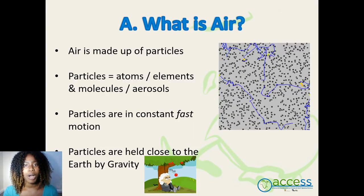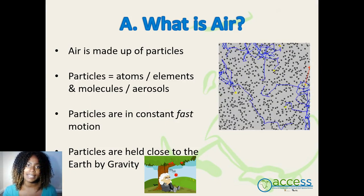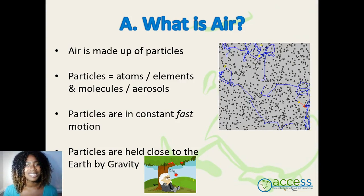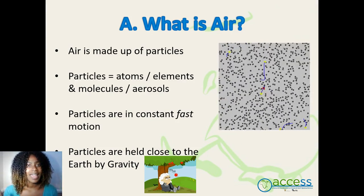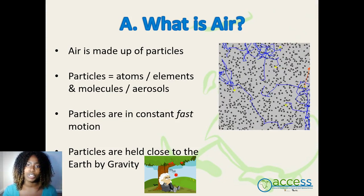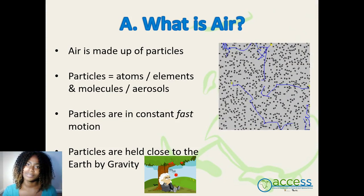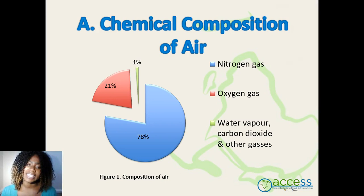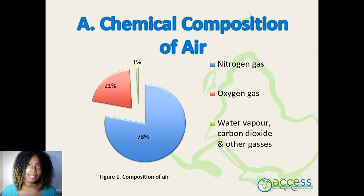Air is made of particles that are of different sizes and are constantly moving in rapid motion. Particles consist of atoms, elements, molecules, and aerosols. They are held close to the earth by gravity. Air comprises 78% nitrogen gas, 21% oxygen gas, and the remaining 1% is composed of water vapour, carbon dioxide, and other gases.